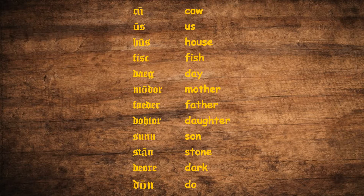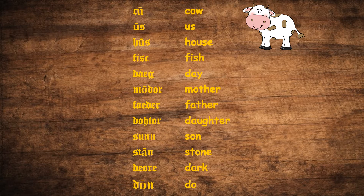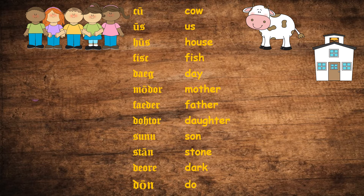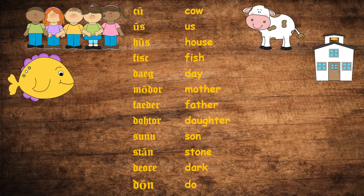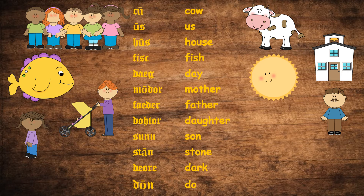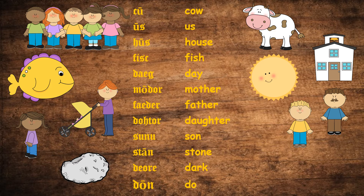Some of these words were: Cu, which was cow; Us, us; Hus, house; Fisk, fish; Dag, day; Mooder, mother; Fadder, father; Dohter, daughter; Sonna, son; Stan, stone; Deorc, dark; and Dun, dew.